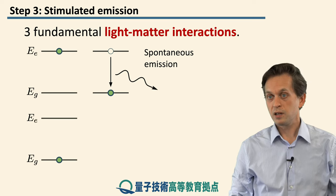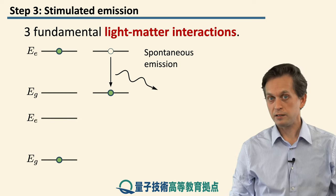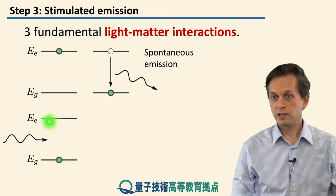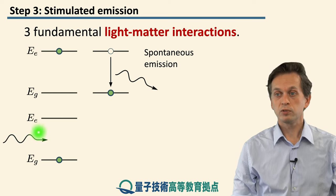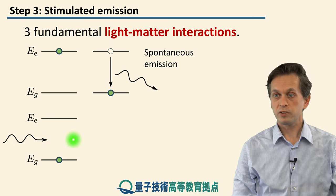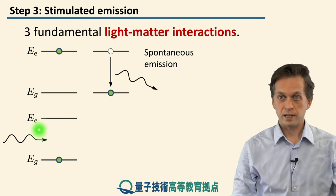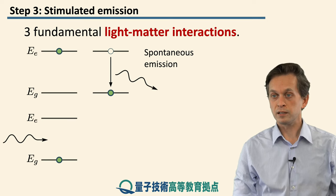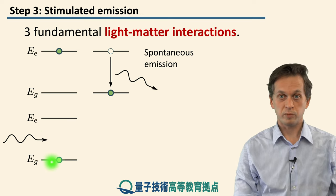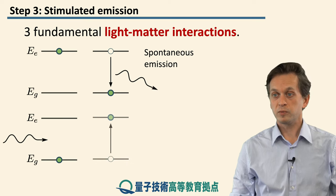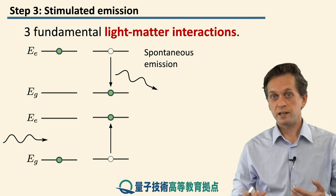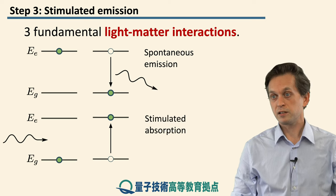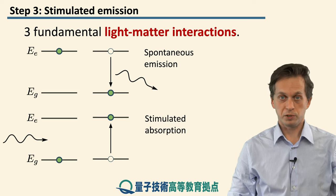We have also seen how to excite an atom by having it interact with a photon tuned to the energy difference between the energies of the excited state and the ground state. Such a photon can interact with an atom in its ground state. The atom then receives this energy, becomes excited, and transitions to the excited state. This is known as stimulated absorption.